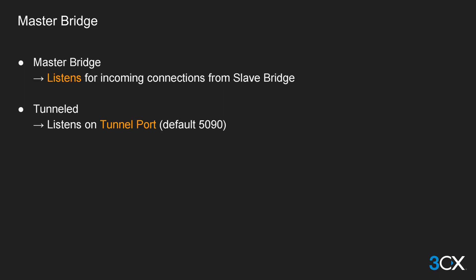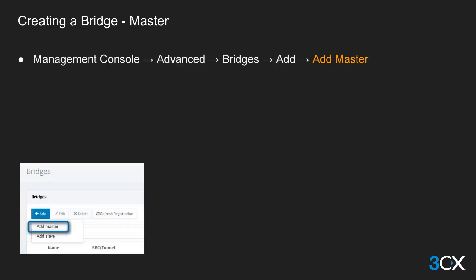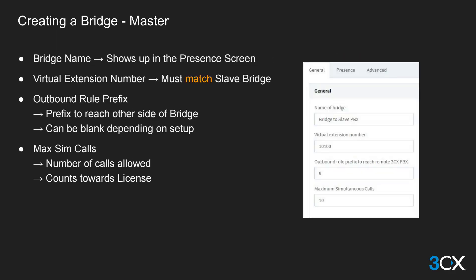Creating a bridge in 3CX is very simple. From the bridges page in the advanced menu on the left-hand side, click the add button and select add master from the drop-down box. The configuration page will ask for the bridge name, which will be used to identify the bridge in the outbound rules and show the remote bridge name in the 3CX apps and 3CX web client presence screens. The virtual extension number will be used during the authentication process when a slave bridge connects to the master bridge.